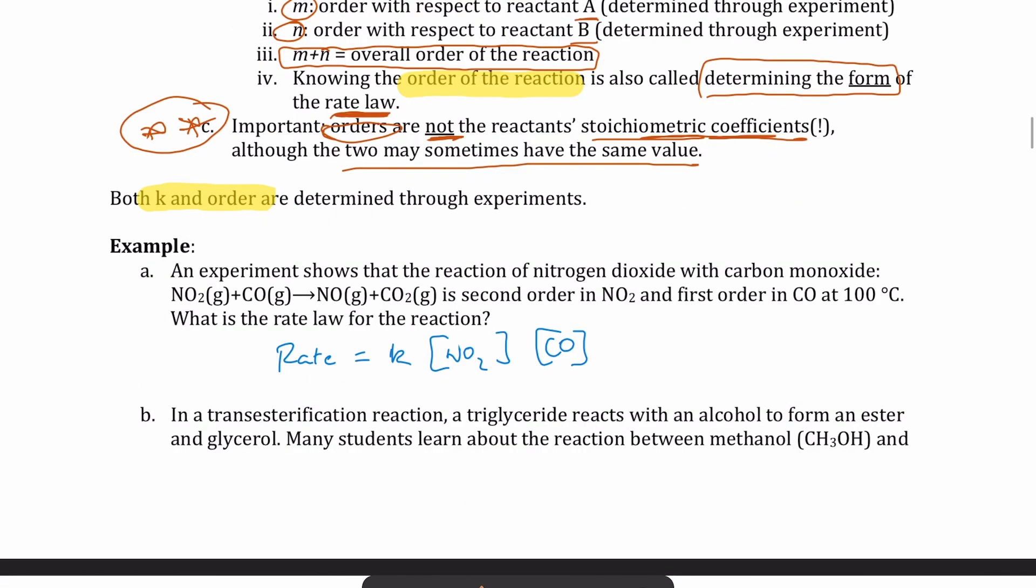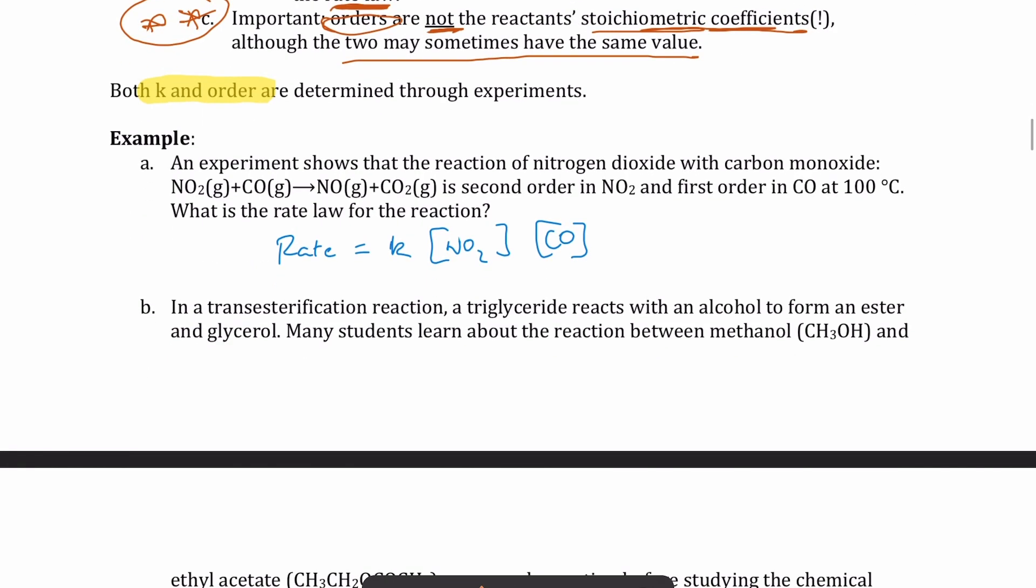So here's an example of just writing rate law. So we're not talking about actually calculating the order yet, or calculating the rate constant. We're going to do that in a sec. But right now, it's just asking you, if I give you a reaction, and then I give you the order of that reaction, can you write the rate law? So here's the reaction, NO2 plus CO goes to NO plus CO2. It tells you that it's second order in NO2 and first order in CO. What is the rate law?